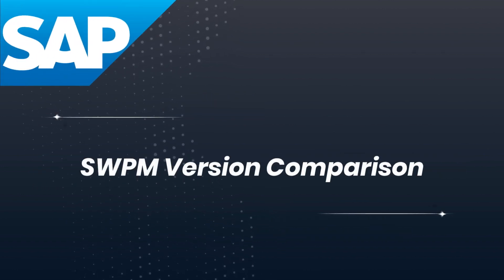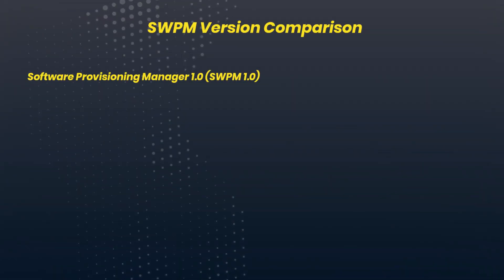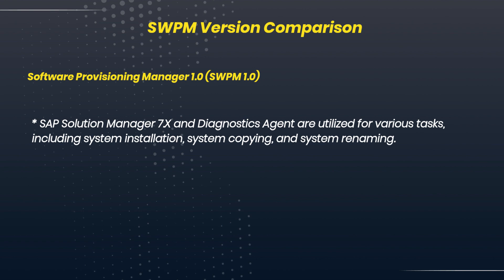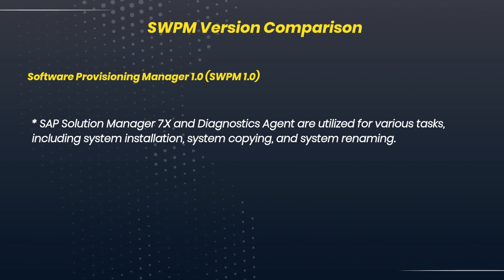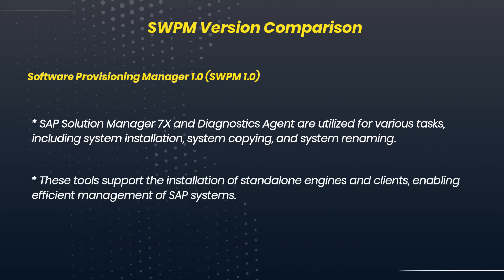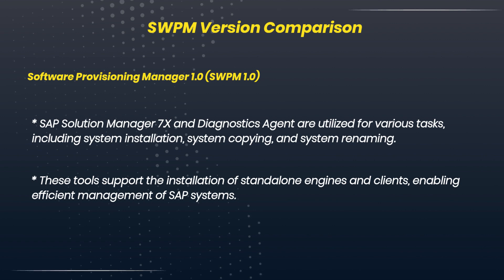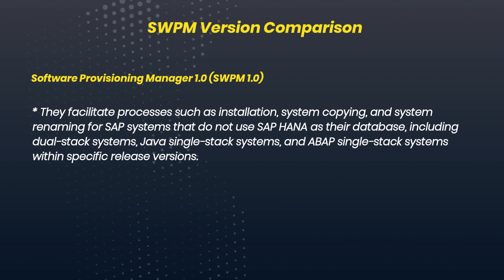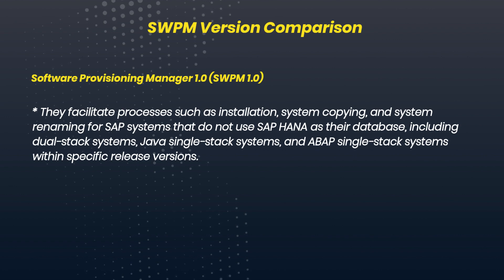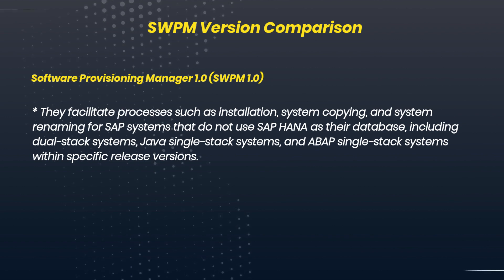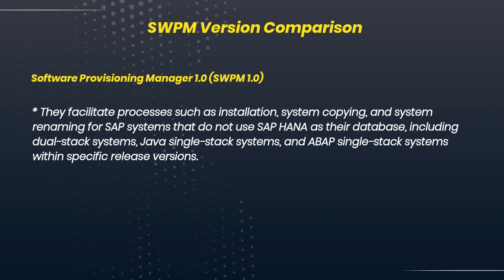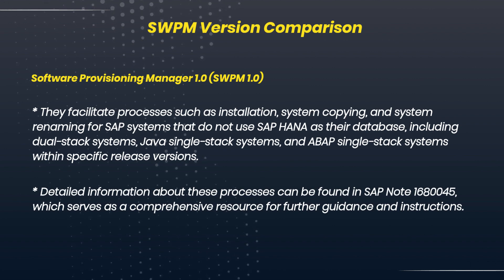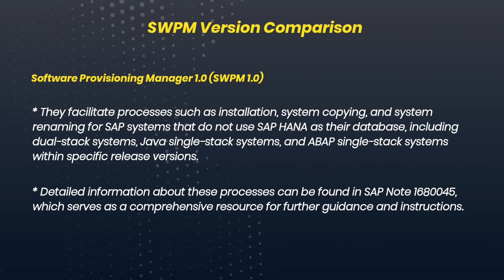The SWPM version comparison. Software Provisioning Manager 1.0: SAP Solution Manager 7.x and Diagnostics Agent are utilized for various tasks, including system installation, system copying, and system renaming. The tools support the installation of standalone engines and clients, enabling efficient management of SAP systems. They facilitate processes such as installation, system copying, and system renaming for SAP systems that do not use SAP HANA as their database, including dual-stack systems, Java single-stack systems, and ABAP single-stack systems within specific release versions. Detailed information can be found in SAP Note 1680045.